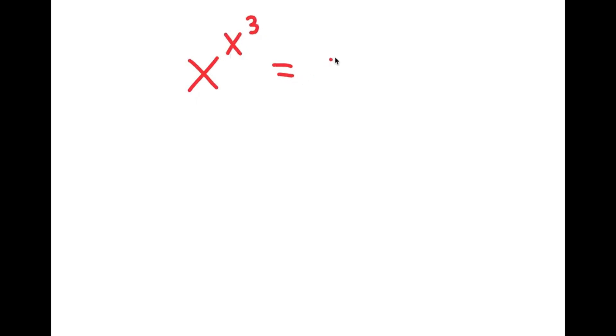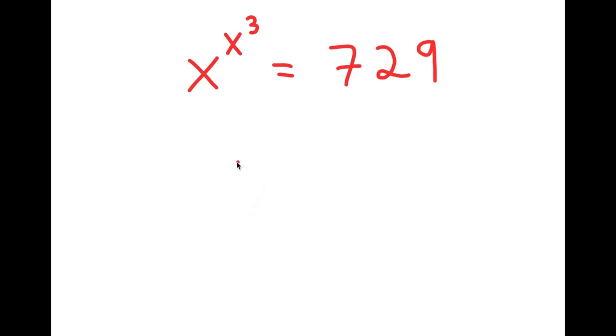In this next problem, I'm going to solve the equation x to the power of x to the power of 3 is equal to 729. To solve this, I'm first going to take the power of 3 on both sides.